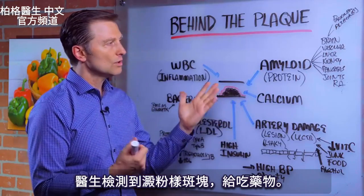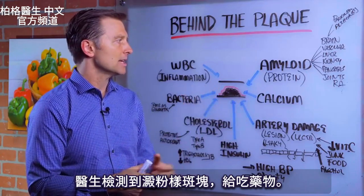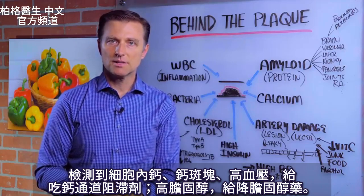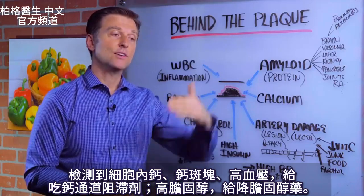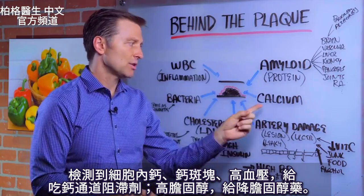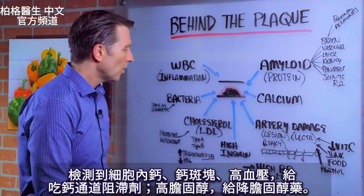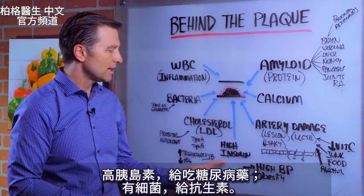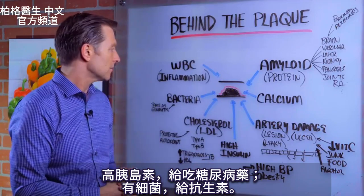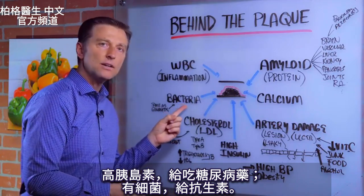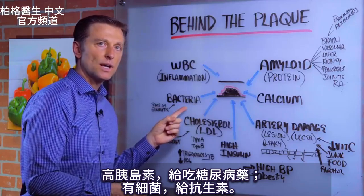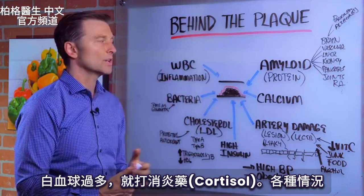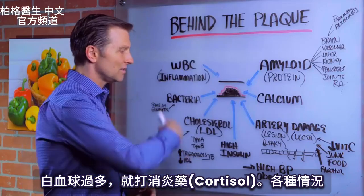When you go to the doctor, they might test for amyloid plaquing and there's a medication for that. They might find intracellular calcium or calcium plaquing, so that's why you have calcium channel blockers for high blood pressure. Or you might have high cholesterol and they put you on a statin. Or high insulin, and they put you on diabetic medication. Or bacteria shows up and they put you on an antibiotic. Or high levels of white blood cells and they put you on a cortisone shot. So you have all these different things that occur.